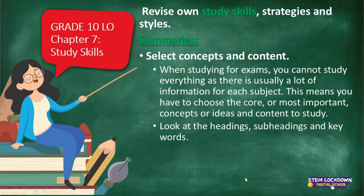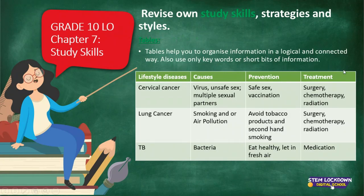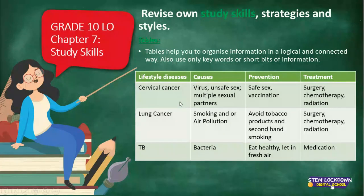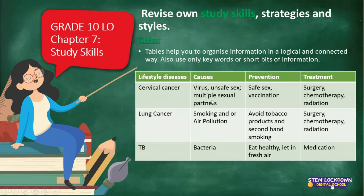Another way of studying - which is how I studied Life Science - is by using tables. Tables help you organize information in a logical and connected way. Use only keywords or short bits of information. For example, with lifestyle diseases such as cervical cancer, lung cancer, and TB, you can organize the causes, prevention, and treatment in a table. When you organize your work like this, it makes it easier to understand - and as you can see, I have no full sentences, just keywords to help remember the information.